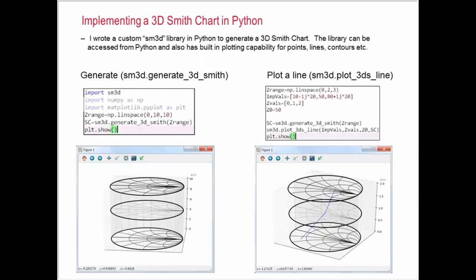I saw this stuff on the Smith Tube, and I thought this would be really valuable for broadband design. So I wanted to see if I could build a library in Python that would enable this type of capability. What I did was wrote a custom library in Python to generate this Smith Tube. The library has a number of built-in plotting capabilities.